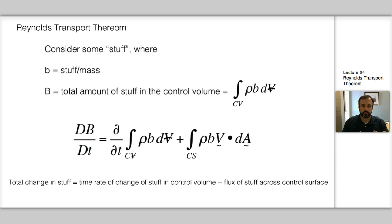And what the Reynolds Transport Theorem ultimately says is the total change of stuff, the left hand side of the equation there, that the total derivative, the total change in stuff, is equal to the time rate of change of stuff in the control volume.